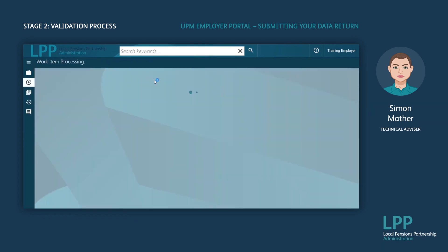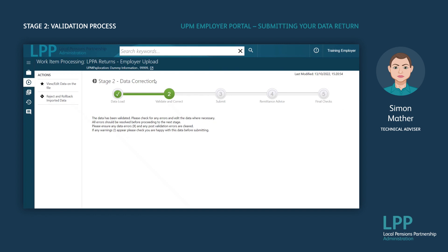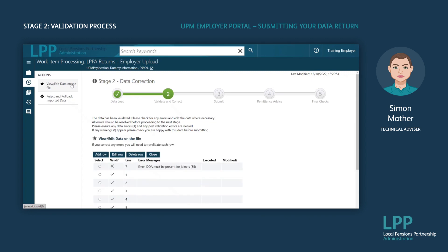Click on the item, then in your actions column select 'View/Edit Data' on the file. Any data errors identified during the validation process will be listed on the screen. You have two options: you can either correct the errors on a line by line basis — recommended if there are only a few — but if there are a significant number of errors or a recurring error on each line, you may find it easier to select 'Reject and Roll Back the Data' in the actions column, make the relevant changes to your CSV file, then begin the upload process again.